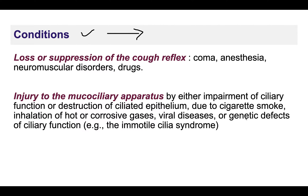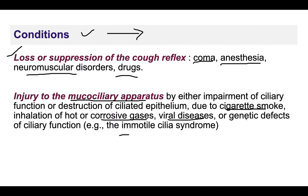The first predisposing condition is loss or suppression of the cough reflex, seen in cases where the person is in a coma, under the effect of anesthesia, any neuromuscular disorders, or drugs. This suppression of the cough reflex makes the person more prone to developing pneumonia. Second is injury to the mucociliary apparatus, which can be caused by cigarette smoke, gases, viral diseases, or genetic defects in ciliary function such as immotile cilia syndrome.